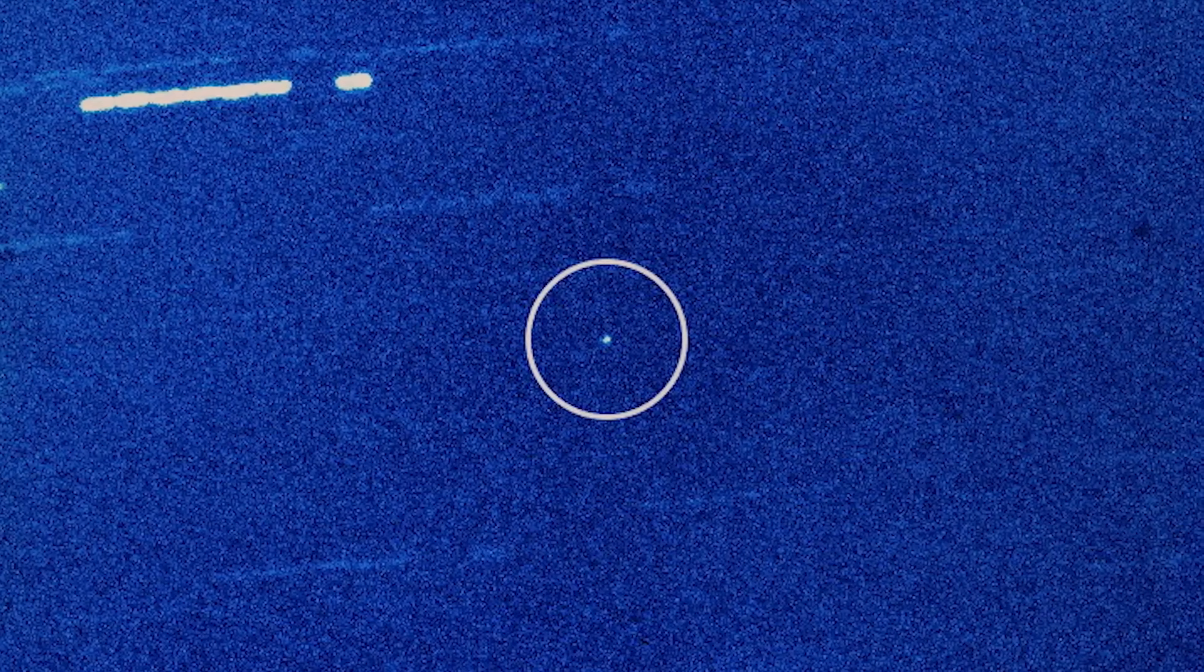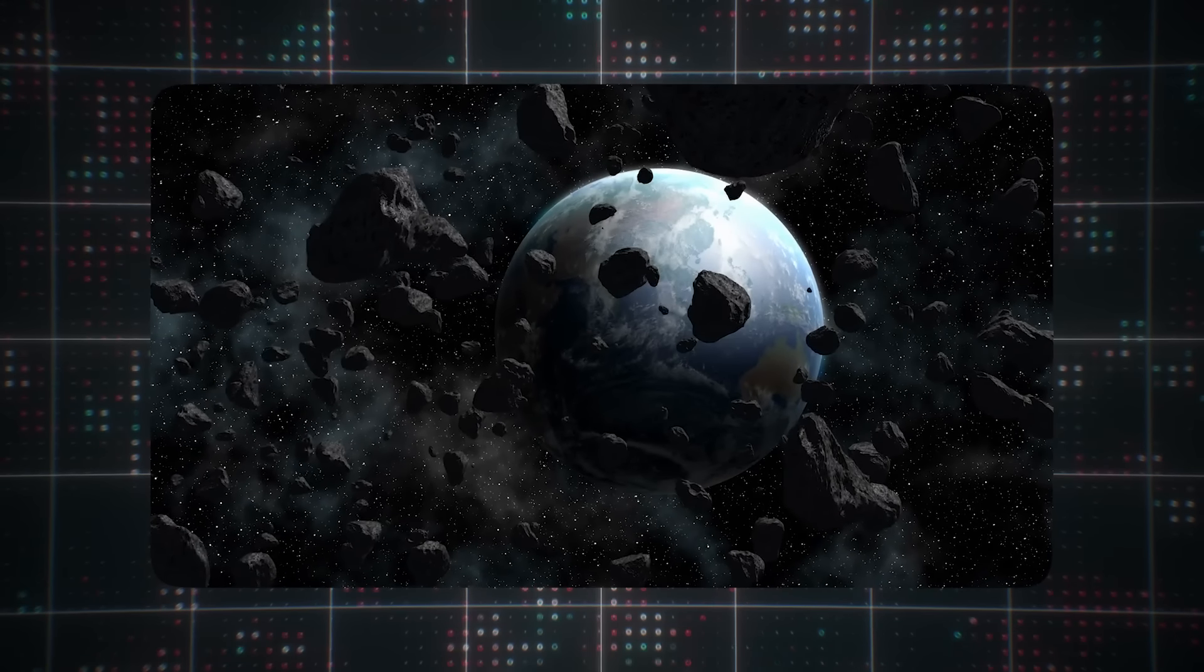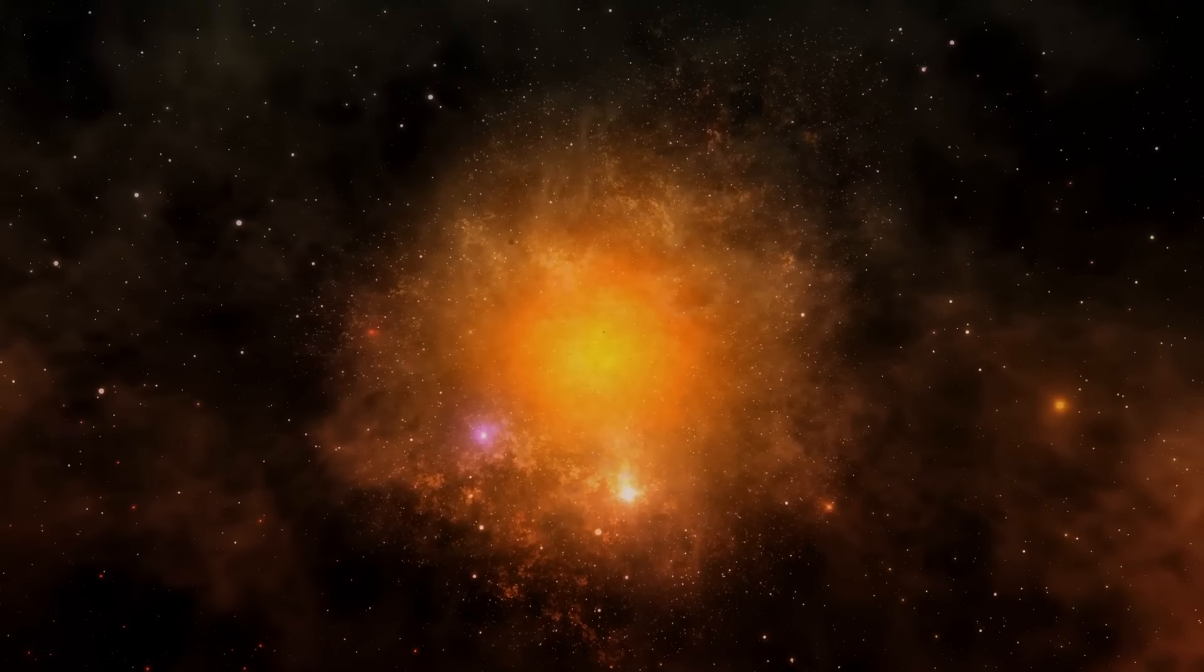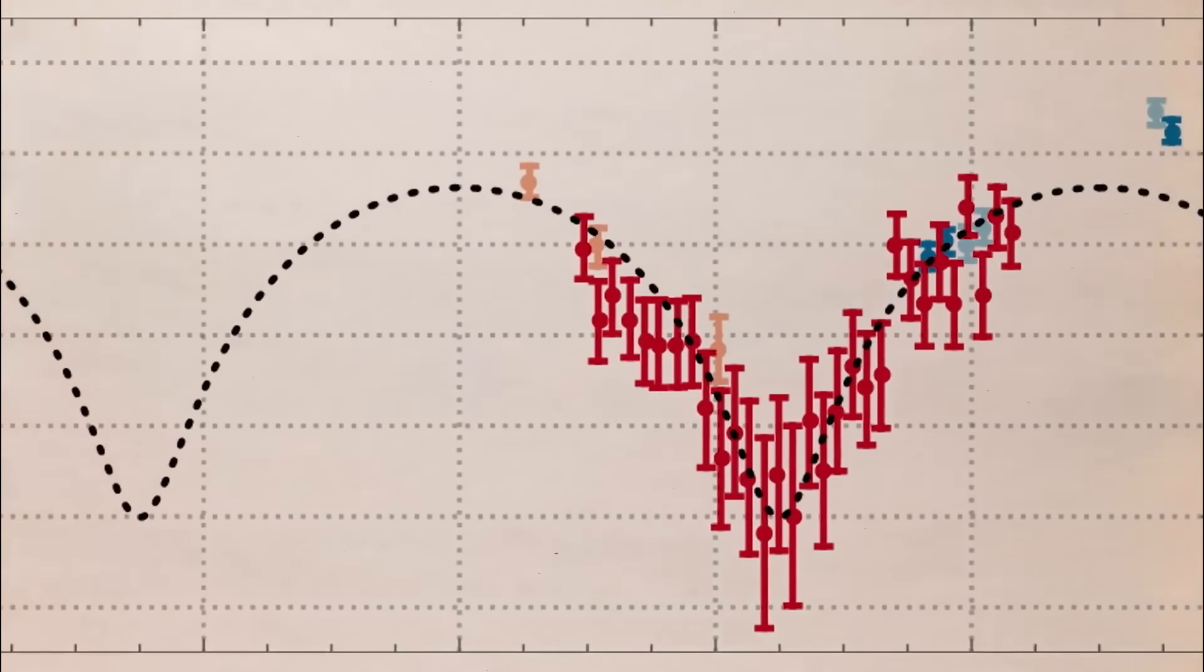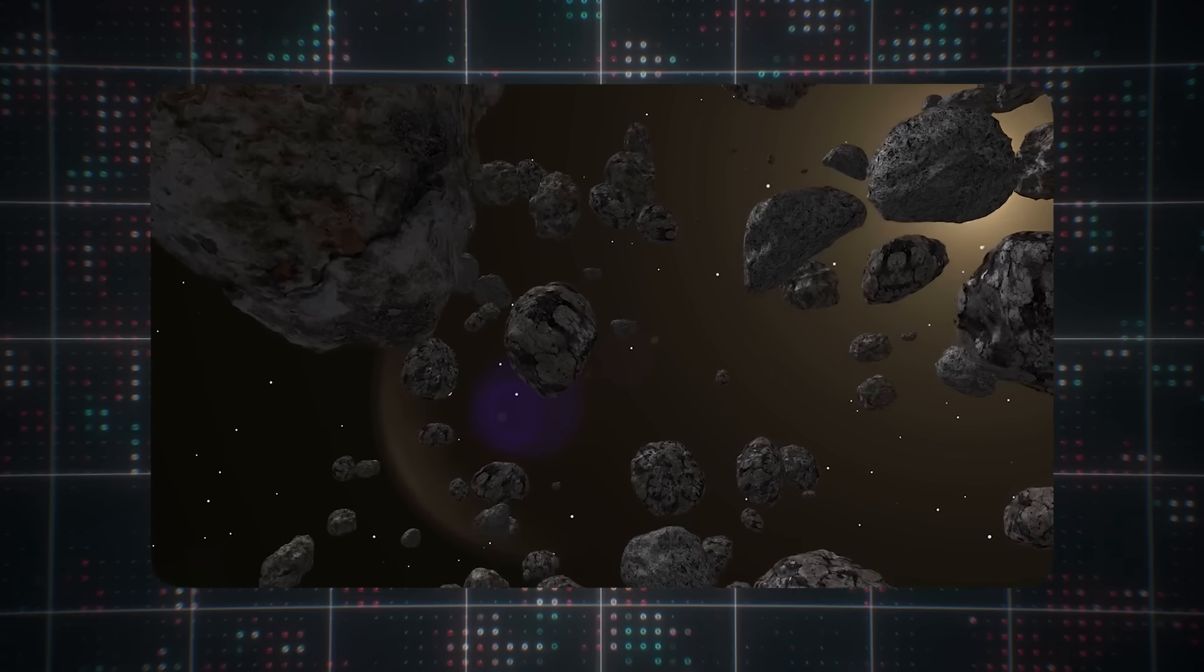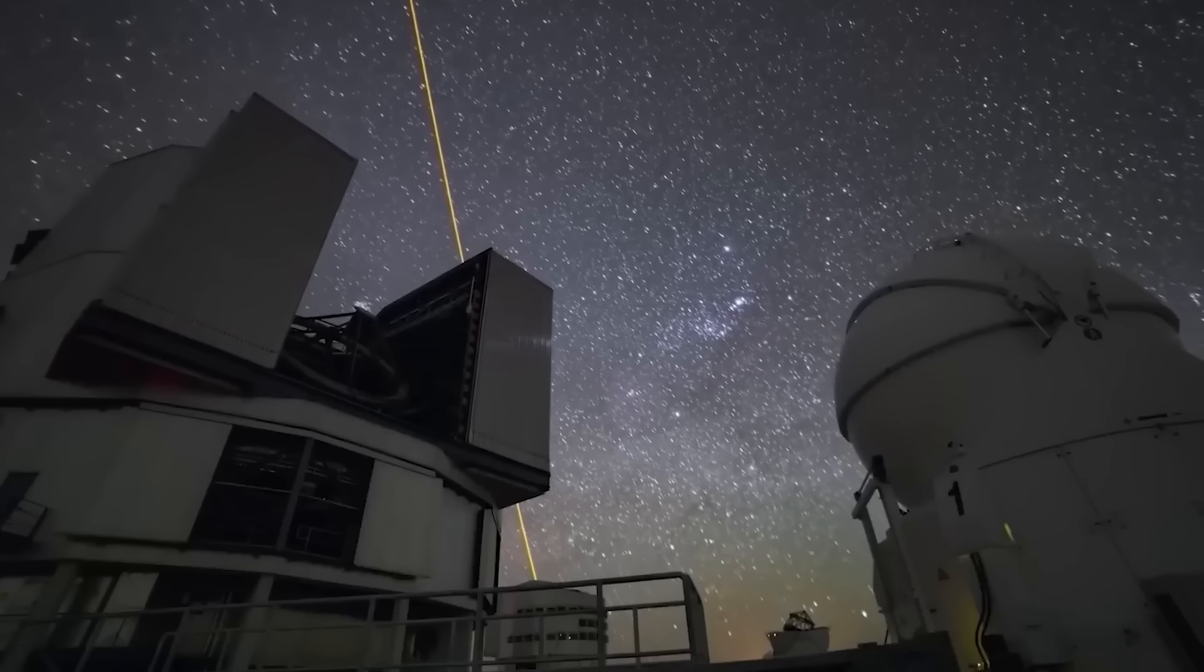It didn't take long before scientists decrypted the unspoken message: Oumuamua was from a different world entirely. Astronomers couldn't believe their eyes when they found out that an essential component was surprisingly missing. Researchers had expected to see a halo or tail, often seen billowing from comets, but Oumuamua had none.